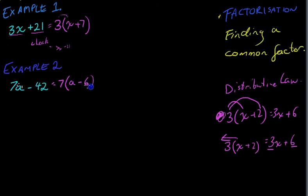You can see the difference between example 1 and example 2 is this negative. So, again, if I wanted to, I can check my work. 7 times a, 7a. 7 times negative 6, negative 42. That's what I started with, so I must be right. Keep going here. You can see I'm flying through these.